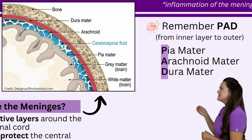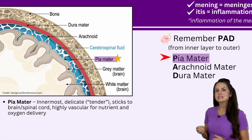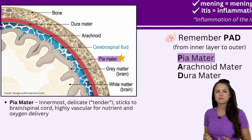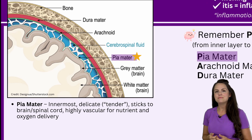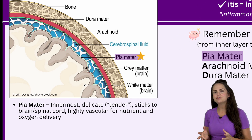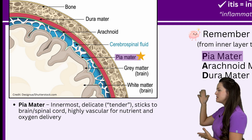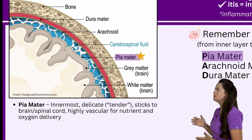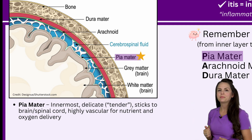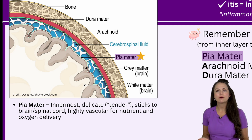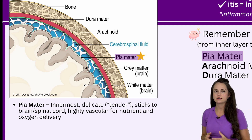First up is the Pia mater — this is the innermost layer. Pia actually comes from Latin and means tender and delicate, so this layer is very tender and delicate. It sticks directly to our brain and spinal cord, and it's highly vascular, so it helps deliver nutrients and oxygen to our CNS.